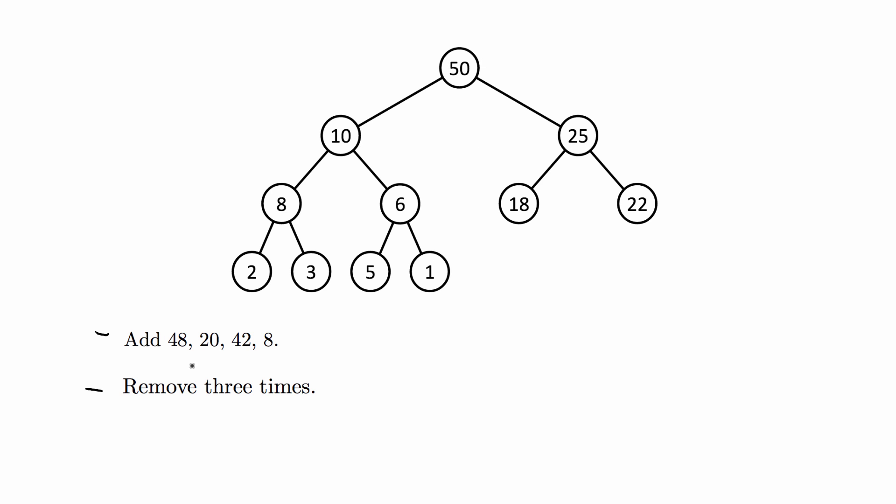Let's go ahead and get started. I'm going to do these operations sequentially. The first one says to add 48. When you're going to add a node to a heap, you want to look for the next available spot to add a leaf node.